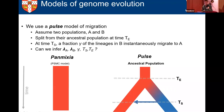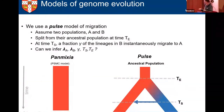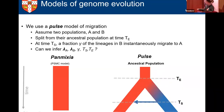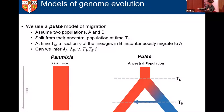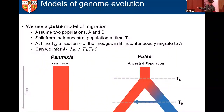We use a PULSE model of structure. Going forwards in time: a population splits into A and B, then later an admixture event occurs where lineages migrate instantaneously. Going backwards in time: lineages in population A migrate into B at time TS, remain isolated, then rejoin at time TE to form the ancestral population. The parameters we seek to infer are: population size changes in A and B, gamma (the split fraction — proportion of introgressing lineages), and the split and rejoin times TS and TE.